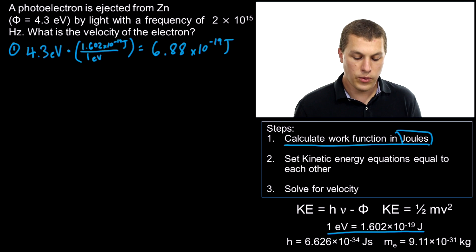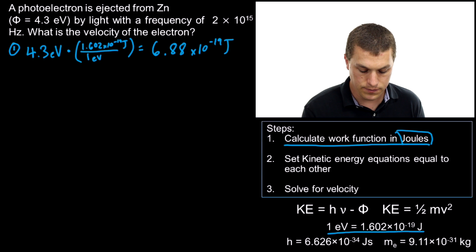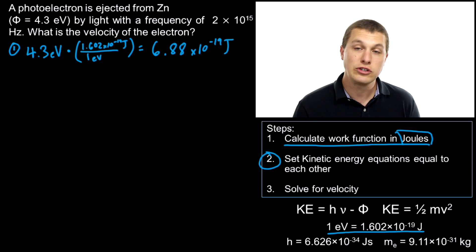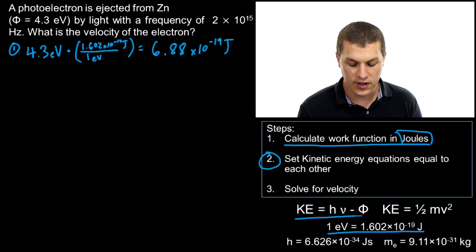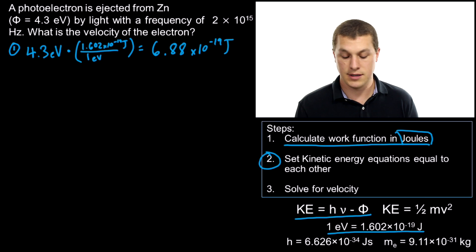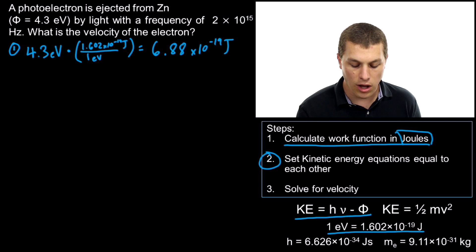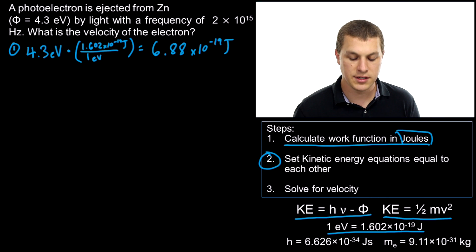Now we've got to do some algebra. We have our work function in joules, but the next step is we're going to set our kinetic energy equations equal to each other. We have two expressions for kinetic energy: KE = hν - Φ from the photoelectric effect, and KE = ½mv² for any object. We're going to use substitution to set those two equal to each other.